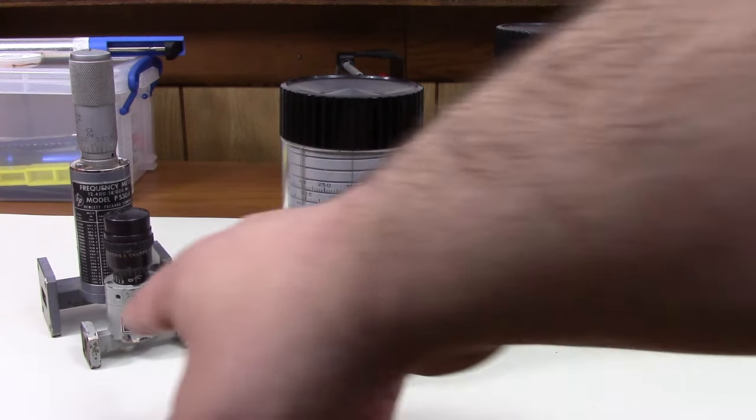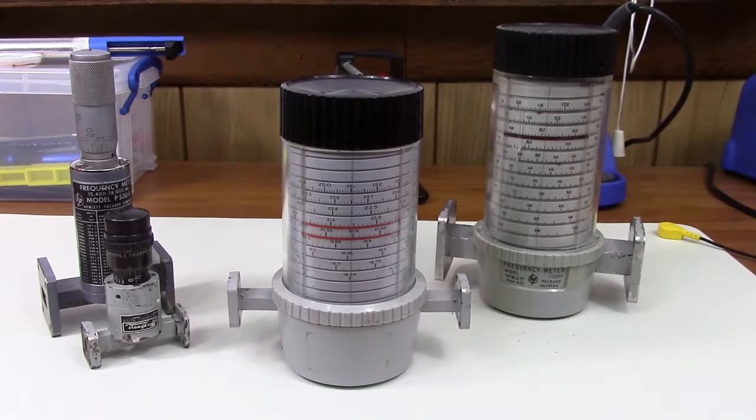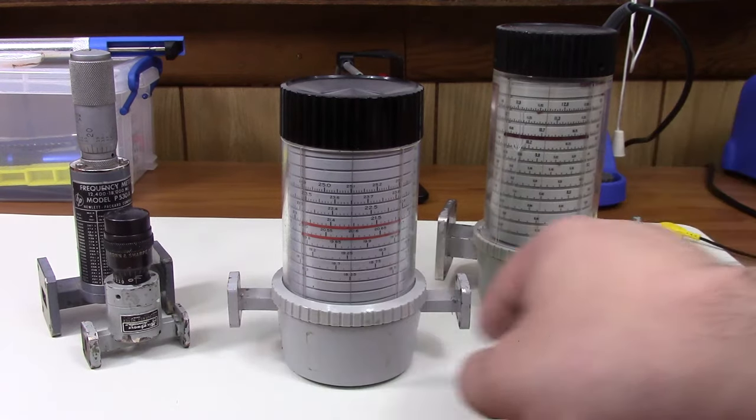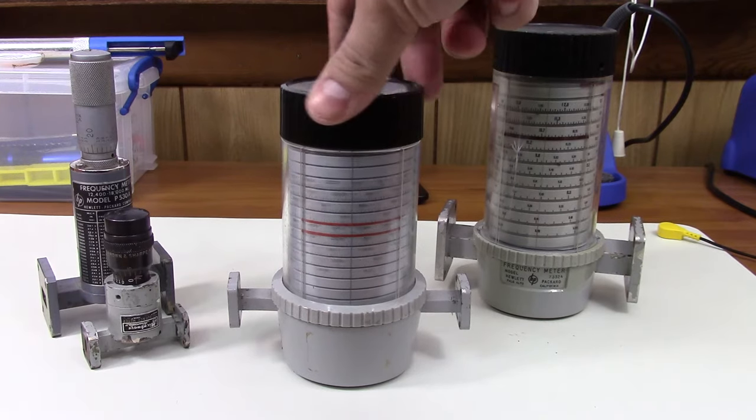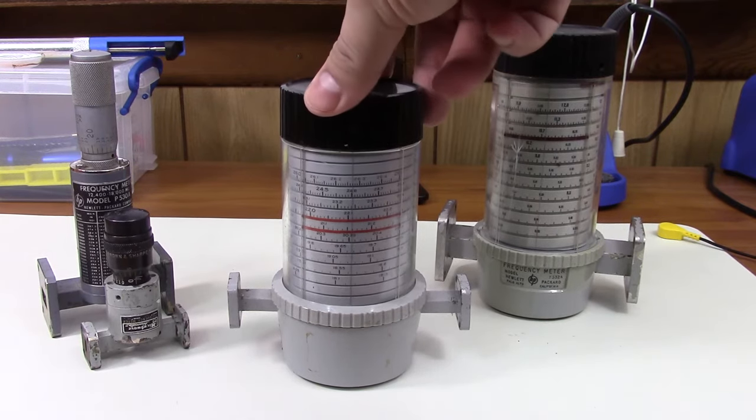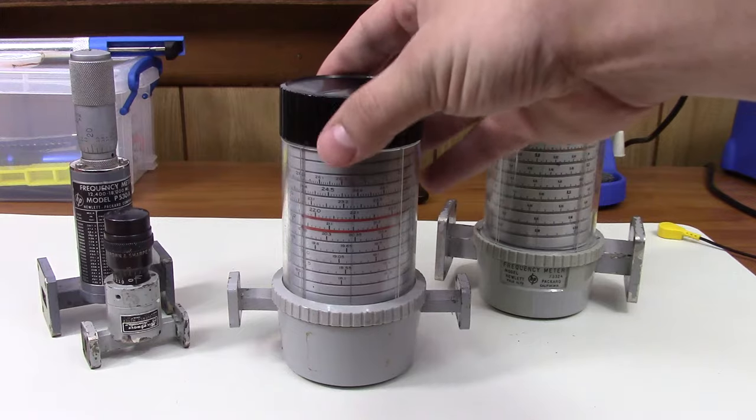If you input an unknown signal here or here, it doesn't matter which way, and put a power detector on the other side, you will be able to see a distinct drop in output power at the resonance frequency of the cavity. You just simply tune around until you see a drop in the output power. It's really that simple.